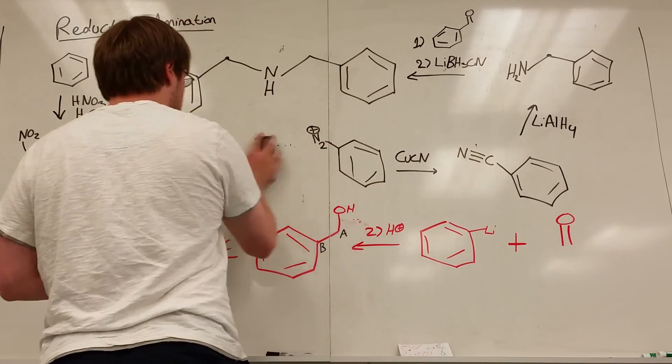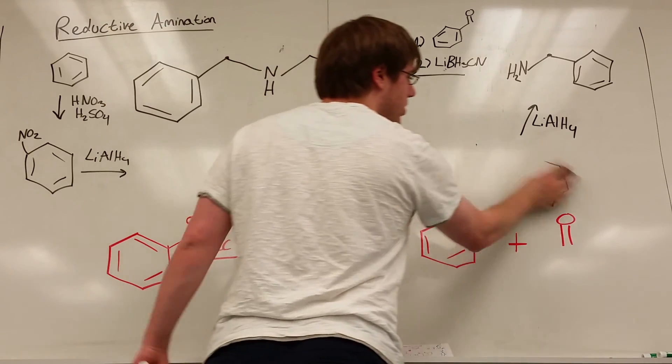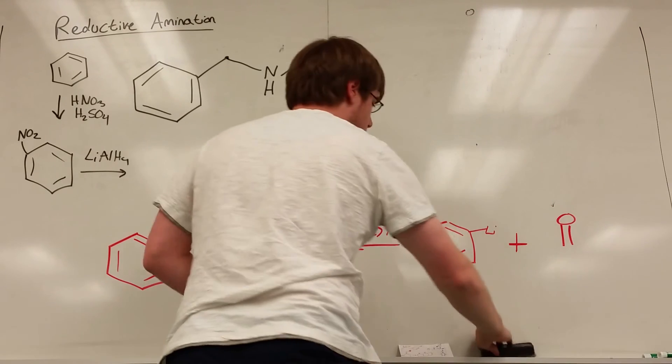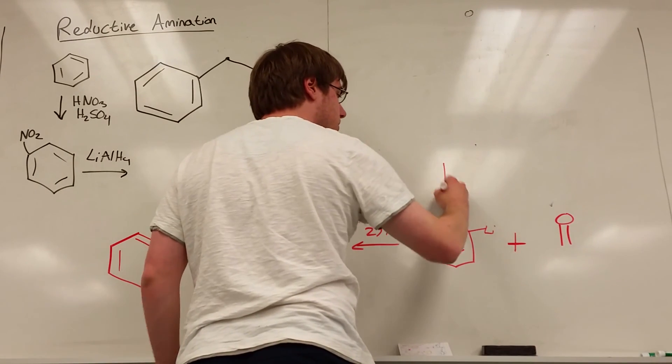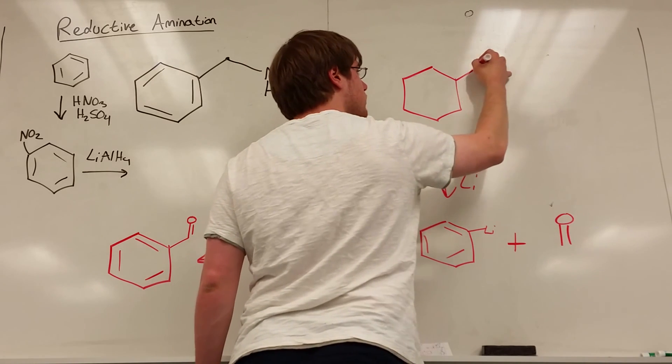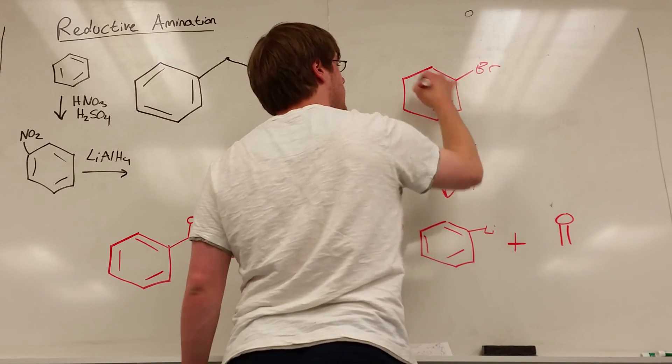So how do we make, how do we get lithium onto a benzene ring? Well, there's only one thing that adds lithium in any reaction that we've talked about, and that's just lithium over the arrow. So you put lithium over the arrow, and what does that replace? It replaces a bromine.